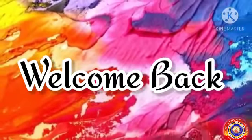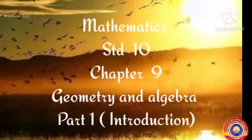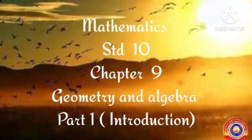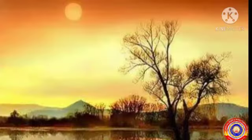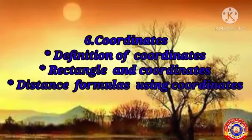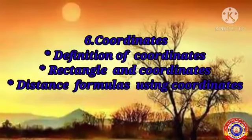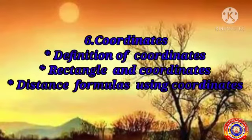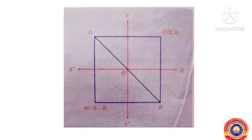Hi children, welcome back to our mathematics class. Today we are going to start our new chapter: Geometry and Algebra. In chapter 6, Coordinates, we have already learned about the definition of coordinates, rectangles and coordinates, and distance formulas using coordinates. We know that the sides of the rectangle are parallel to the coordinate axis, so we can easily find the unknown coordinates by using the given coordinates.